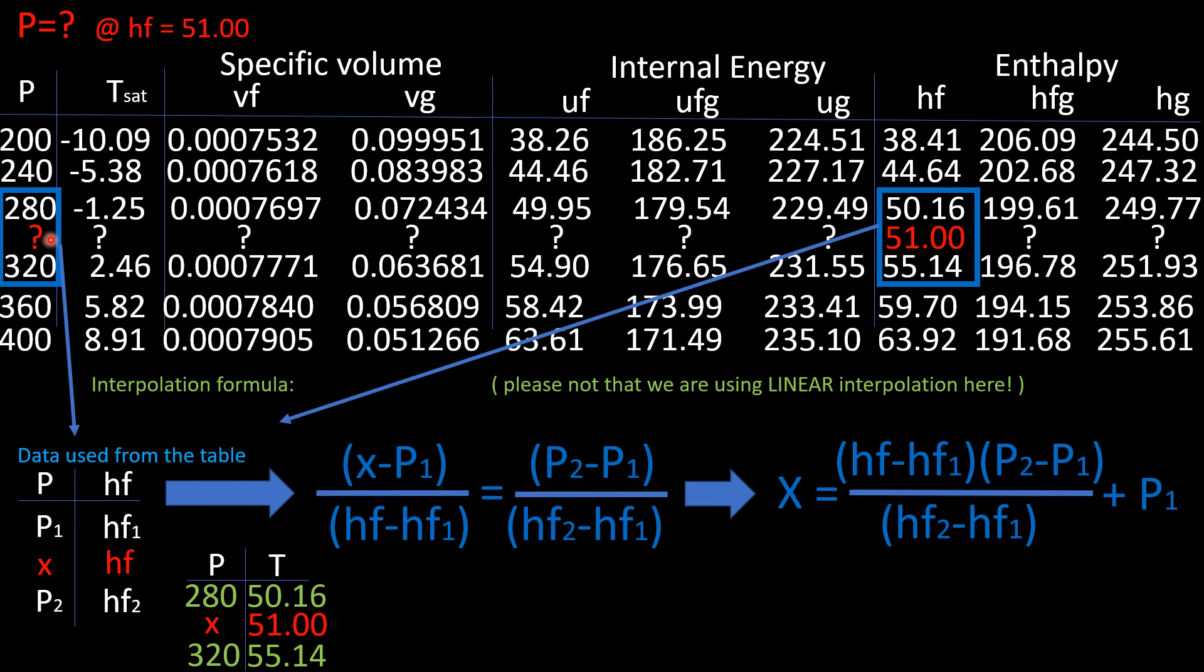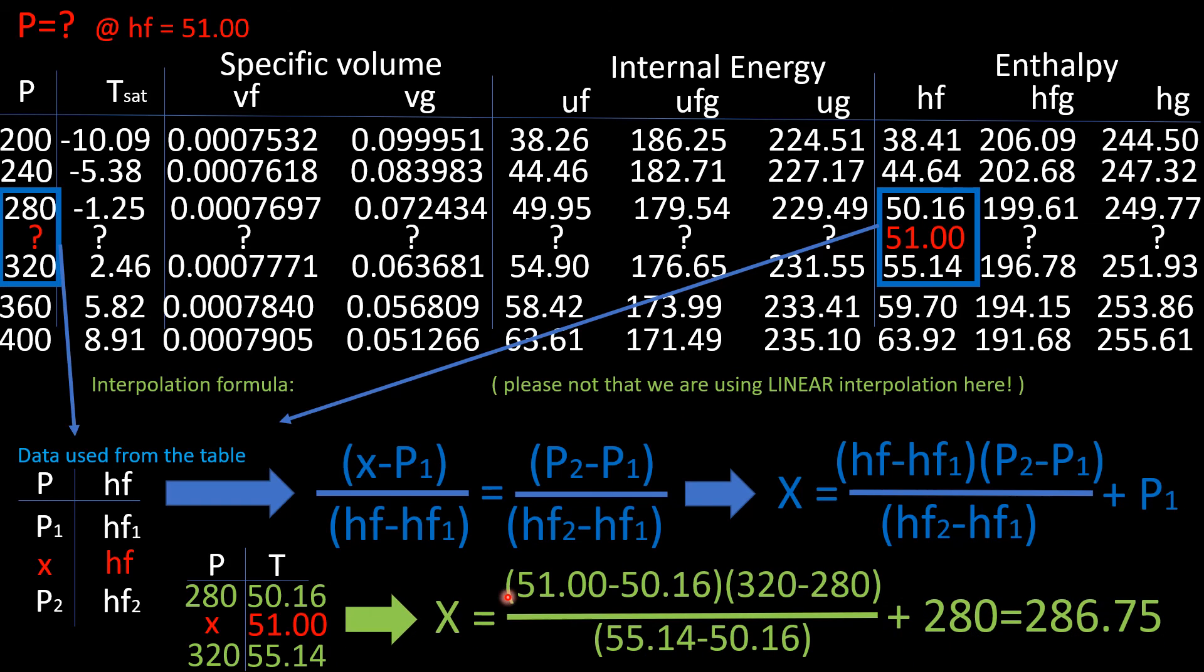So X is here. My other mini table with the actual values from here and here, plug in from here down here, and we can see that the P value that was not given for this enthalpy is 286.75.